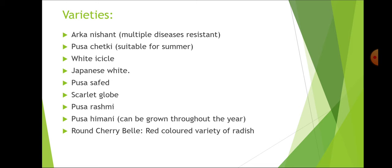The first important variety of radish is Arka Nishant. It is a multiple disease-resistant Asiatic variety that matures within 45 to 55 days. The roots are medium-sized with marble white crisp texture. Being multiple disease-resistant, it is free from early bolting, pithiness, splitting and forking. Pungency is mild and this variety was developed by IIHR Bangalore.